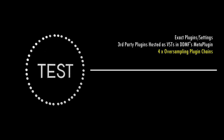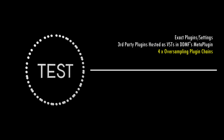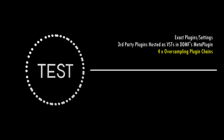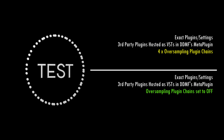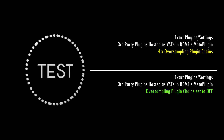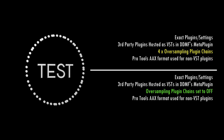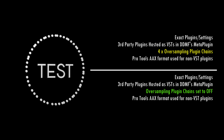Both mixes used the exact same plugins and settings, with all third-party plugins hosted within DDMF's Meta plugin as VSTs. One mix is set to four times oversampling for each plugin chain; in the other version I've simply turned the oversampling off. Where no VST plugin was available, I simply used Pro Tools native AAX format for both test subjects.